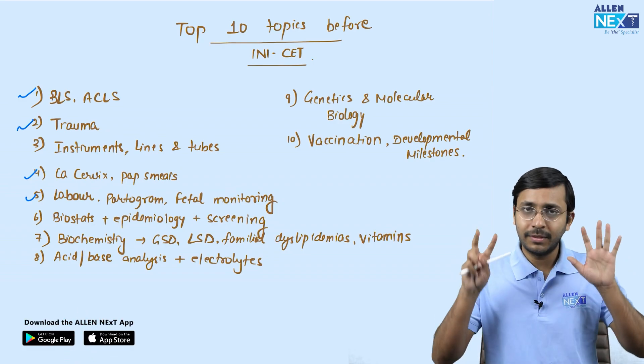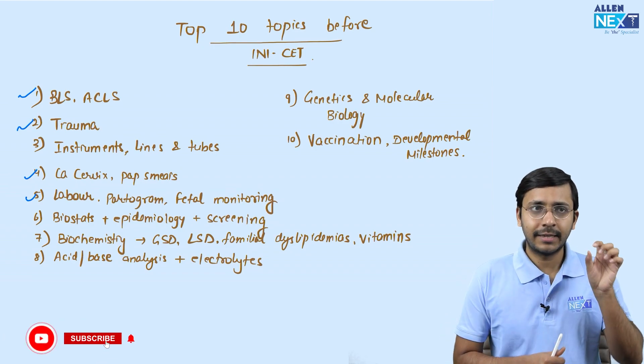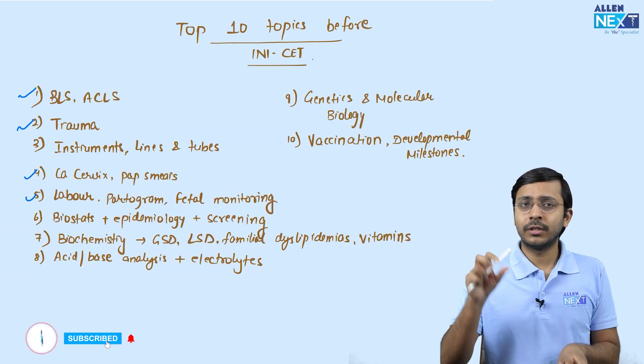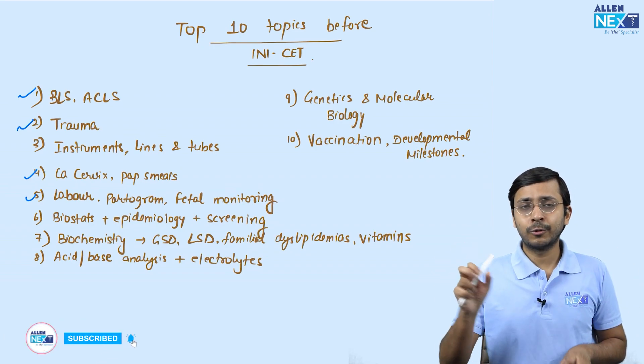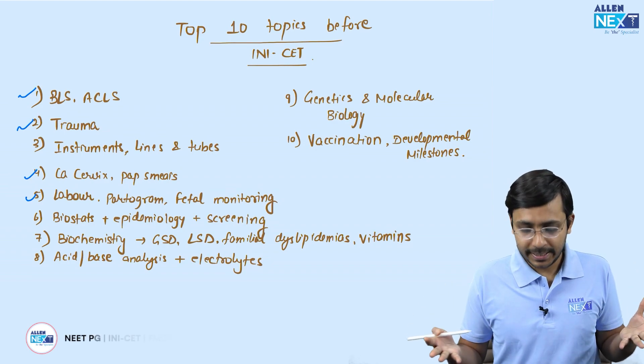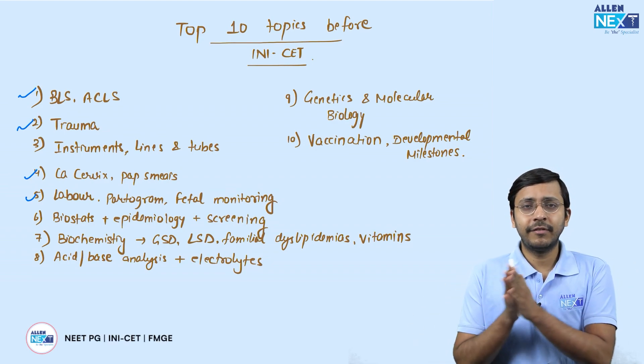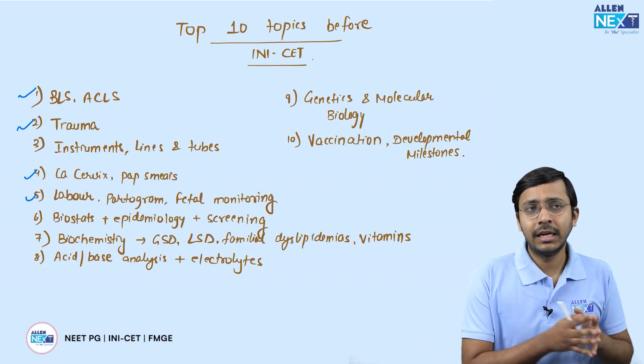Number seven: In biochemistry — lysosomal storage disorders, glycogen storage disorders, familial dyslipidemias, and vitamins. These are very high-yield volatile topics that you should revise before the NICT exam.